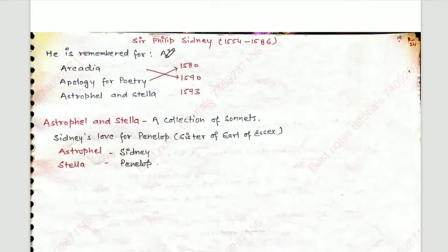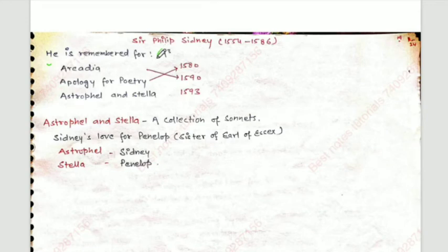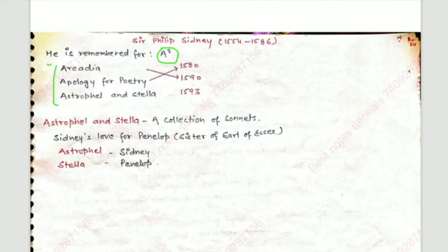Sir Philip Sidney, 1554 to 1586 — you can remember his three major works easily because they all start with the letter A. First is Arcadia, published in 1590. Second is Apology for Poetry, published in 1580. Third is Astrophil and Stella, published in 1593.